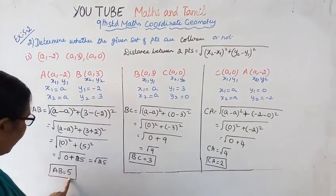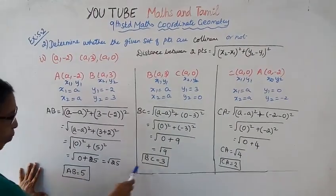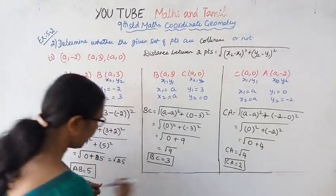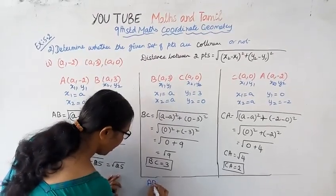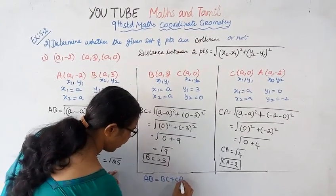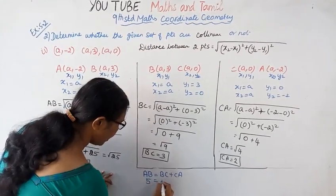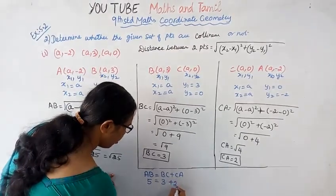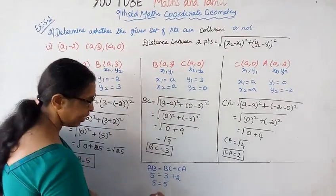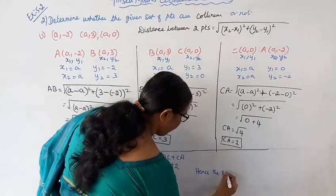Now we check: AB is 5, BC is 3, CA is 2. AB is the largest. So we check if AB equals BC plus CA. AB equals 5, BC is 3, CA is 2: 3 plus 2 equals 5. So 5 equals 5 — the condition holds, and the points are collinear.